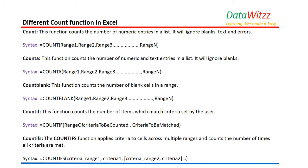COUNT counts the number of numeric entries in a list — it will ignore blanks, text, and errors. The syntax is: COUNT(number1, number2, number3) or you can pass in ranges such as range1, range2, range3, as many as you want.